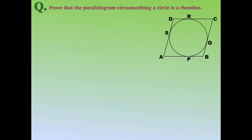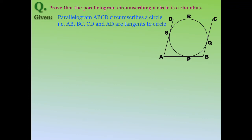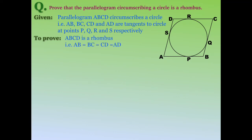The next question is similar: prove that a parallelogram circumscribing a circle is a rhombus. We are given parallelogram ABCD circumscribing a circle, meaning all four sides are tangents to the circle at four different points. We need to prove ABCD is a rhombus, i.e., all four sides are equal.